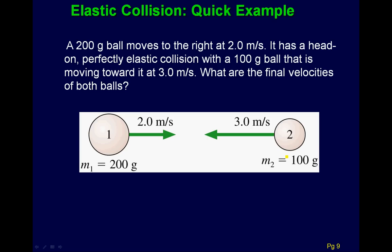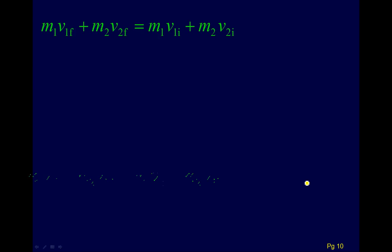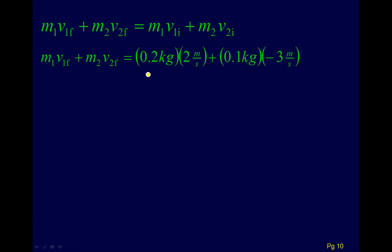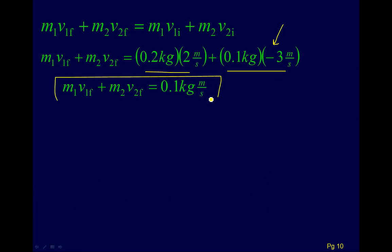Here's a standard elastic collision example. You're told it's perfectly elastic — remember, you usually have to be told that. We have a 200-gram object moving at positive 2 m/s colliding with a 100-gram object moving at negative 3 m/s. We set up momentum conservation with the initial information for both balls, being careful that the 3 m/s is negative.